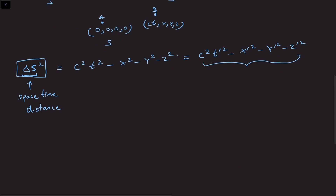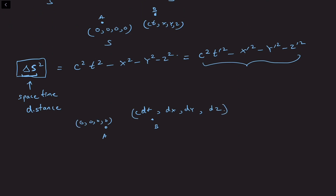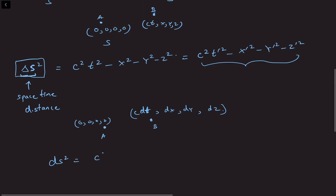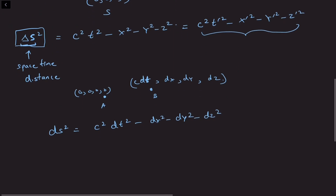Let's write this in infinitesimal form. For two spacetime points A and B separated by dt, dx, dy, dz, we define the infinitesimal spacetime distance as ds squared = C squared dt squared minus dx squared minus dy squared minus dz squared. For an observer in frame S prime, the same spacetime points give the same distance measure calculated using the coordinates in the new frame.